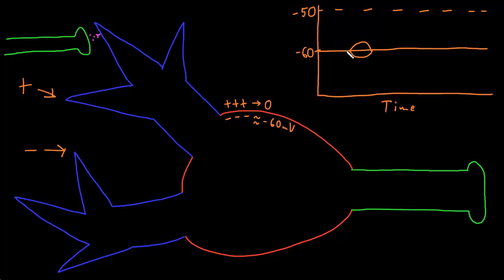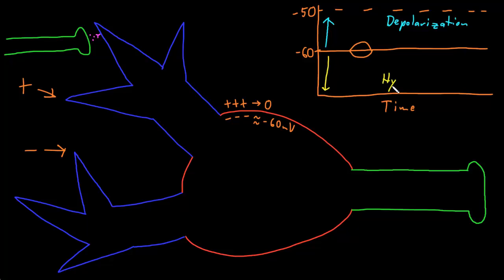A graded potential that moves the membrane potential to a less negative number — closer to zero — is called a depolarization, because the membrane is now less polarized and has less charge separation. These are also called excitatory potentials because they move the membrane potential closer to the threshold, increasing the likelihood that an action potential will be started at the trigger zone. A graded potential that moves the membrane potential to a more negative number — farther from zero — is called a hyperpolarization, because it increases the polarization or charge separation of the membrane. Hyperpolarizations are also called inhibitory potentials because they decrease the likelihood that an action potential will be started at the trigger zone.